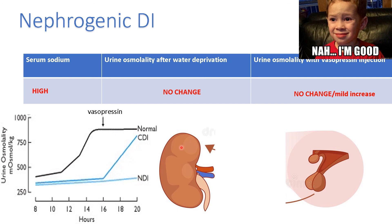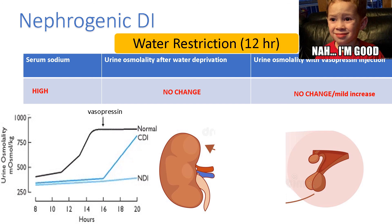This confirms the pituitary is actually intact and the problem lies in the kidney. So the key distinction between central and nephrogenic diabetes insipidus is response to vasopressin injection: in central DI the vasopressin deficiency means it responds normally when given exogenously, but in nephrogenic DI the kidney is resistant to both endogenous and exogenous ADH, so urine osmolality stays the same throughout the entire water deprivation test.